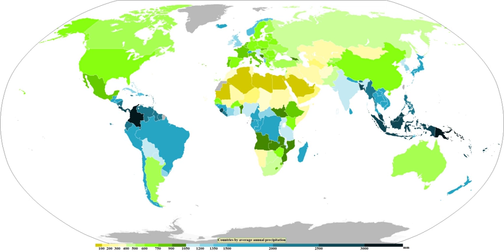Rain forests are characterized by high rainfall, with definitions setting minimum normal annual rainfall between 1,750 and 2,000 mm. A tropical savanna is a grassland biome located in semi-arid to semi-humid climate regions of subtropical and tropical latitudes, with rainfall between 750 and 1,270 mm a year. They are widespread in Africa, and are also found in India, the northern parts of South America, Malaysia, and Australia.